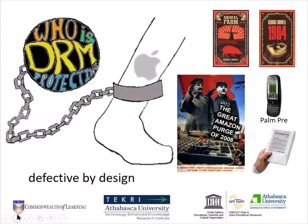They've actually gone into people's devices and taken out books that people have purchased. The most notable case was Animal Farm and 1984, where Amazon sold them and then took them back — went into people's computers and took them off. The great Amazon purge of 2008 was when they went in and took off all the e-books from everybody who had purchased one. It's a way they control your device.